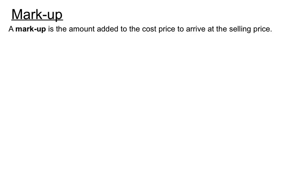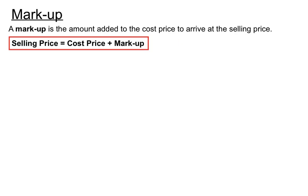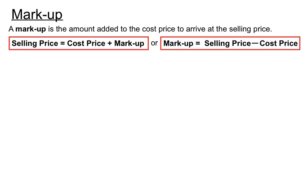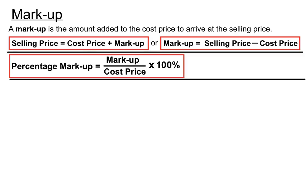A markup is another way of saying you've increased the price. A markup is the amount added to the cost price to arrive at the selling price. Shops buy goods for a certain amount and mark them up to make a profit. The selling price equals the cost price plus the markup. Percentage markup is the markup amount over the cost price, times by a hundred percent — very similar to the percentage profit calculation.